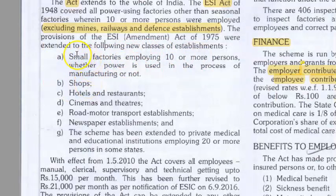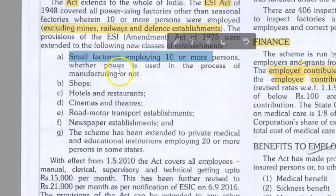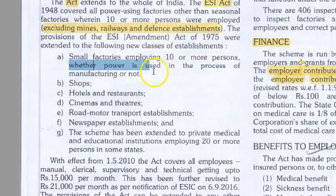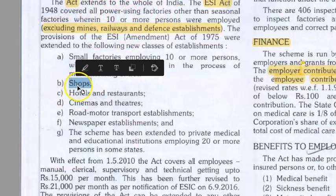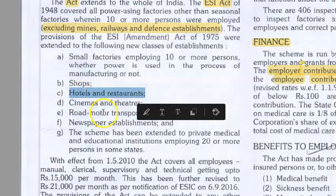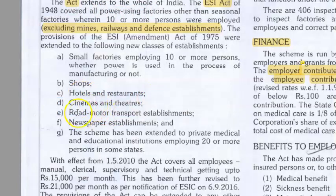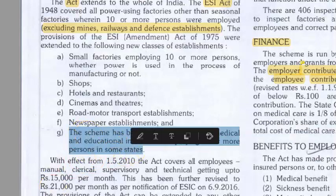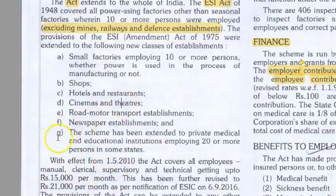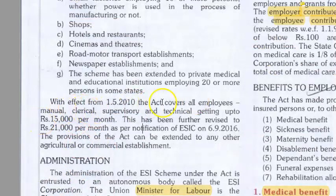What establishments are covered? Small factories employing 10 or more persons whether power is used or not, shops, hotels, restaurants, cinemas, theatres, road motor transport, newspapers, and in some states, private medical and educational institutions employing 20 or more persons. It covers all employees — manual, clerical, supervisory, technical.